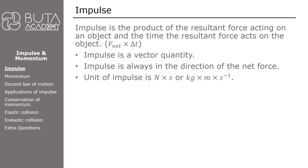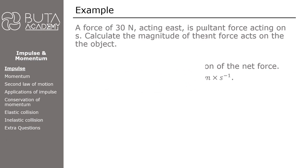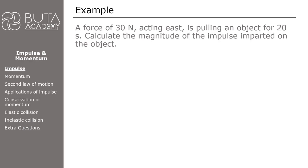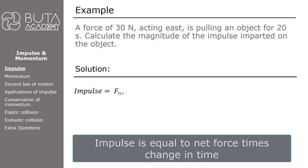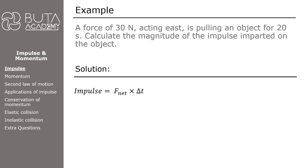We can finish this section by solving a simple example. A force of 30 Newtons acting east is pulling an object for 20 seconds. Calculate the magnitude of the impulse imparted on the object. Impulse is equal to net force times time. The net force is 30 Newtons and the time of impact is 20 seconds. Therefore, impulse imparted on the object is equal to 600 Newton seconds.